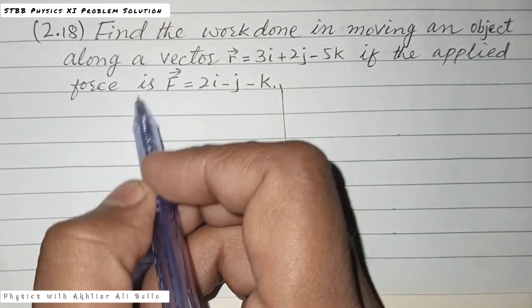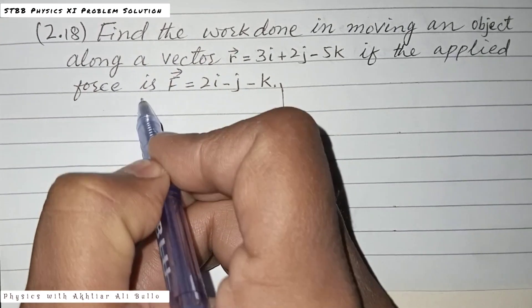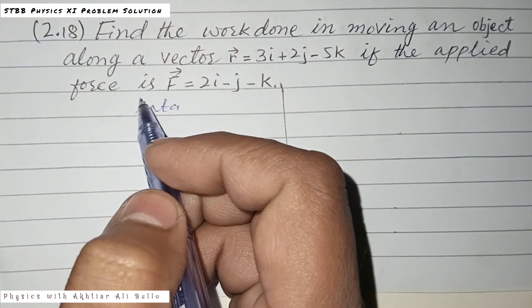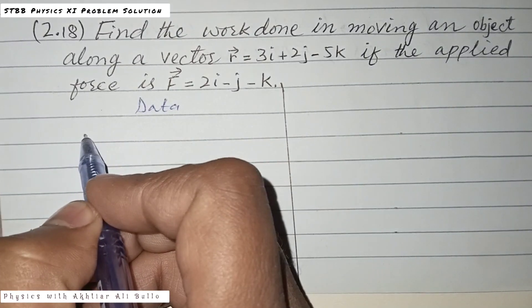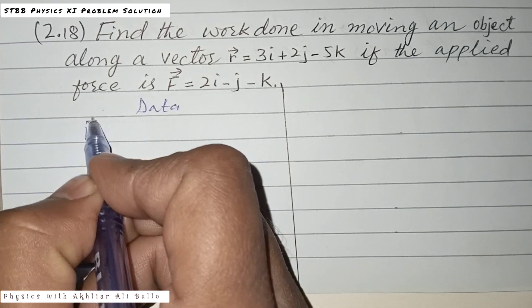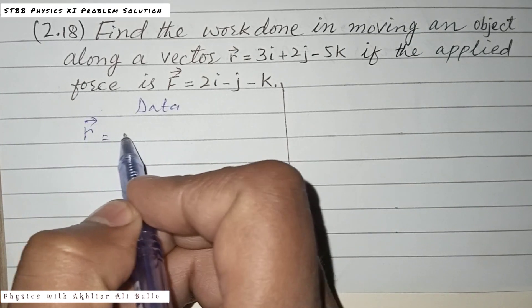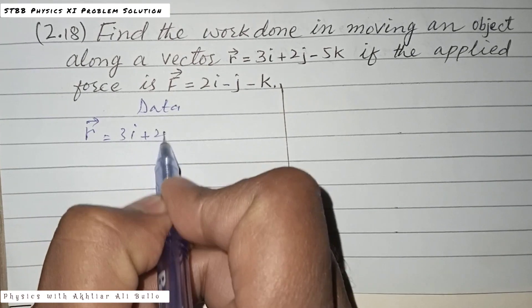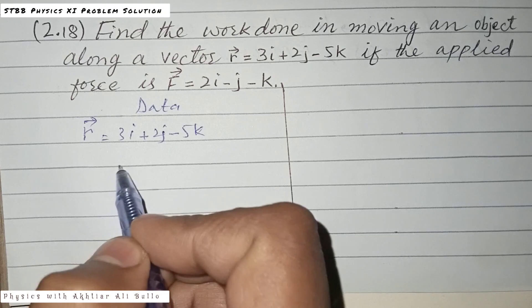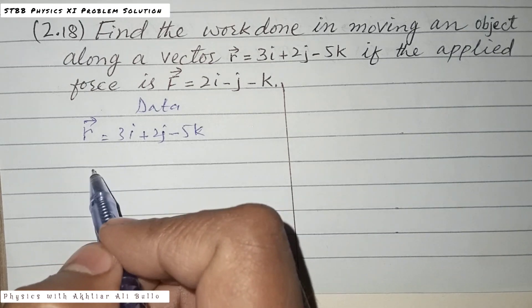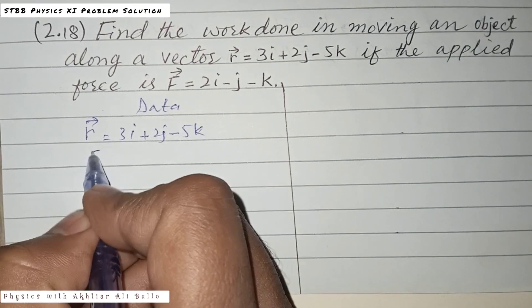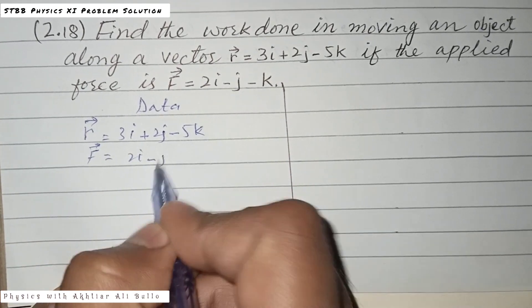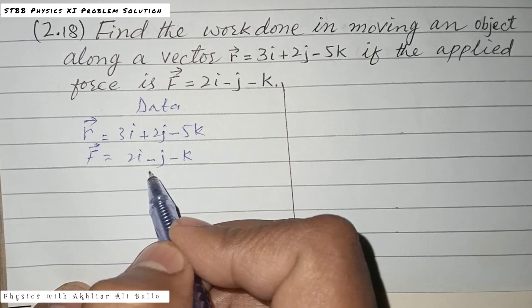First, we will write the data. The displacement is 3i plus 2j minus 5k and the force is 2i minus j minus k.